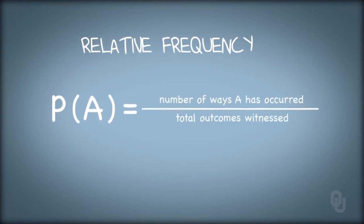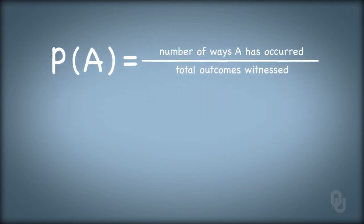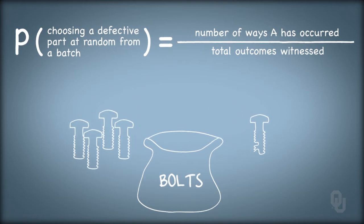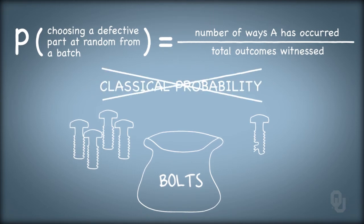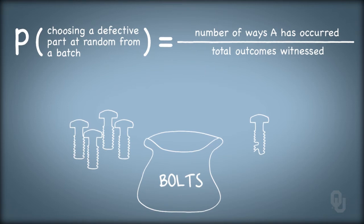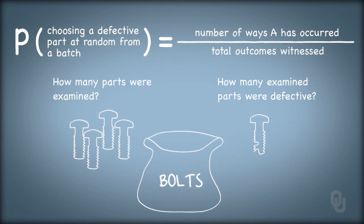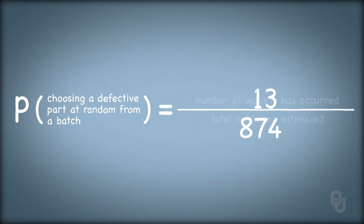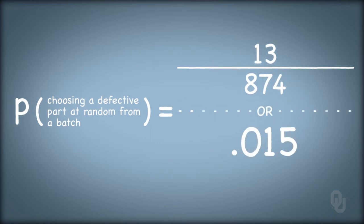Let's say we define an event A as choosing a defective part at random from a batch. We can't explicitly calculate the numerator and denominator to find the probability of a defective part, so we can't use classical probability here. We look back at historic data, find how many parts have been examined and how many of those parts examined were defective. If 874 parts were tested and 13 of them were defective, the probability of event A choosing a defective part at random is 13 out of 874, or roughly .015.